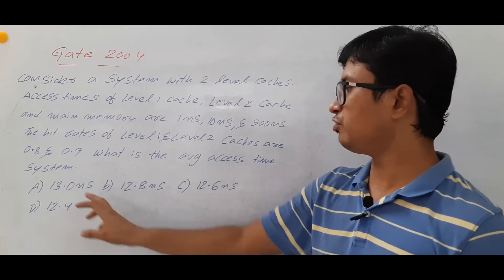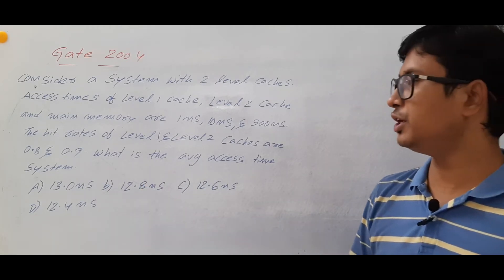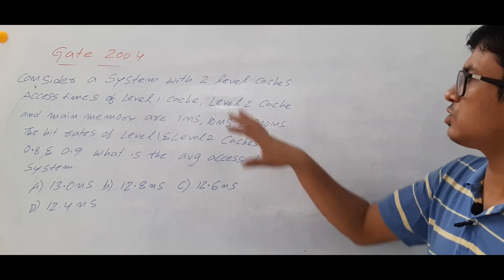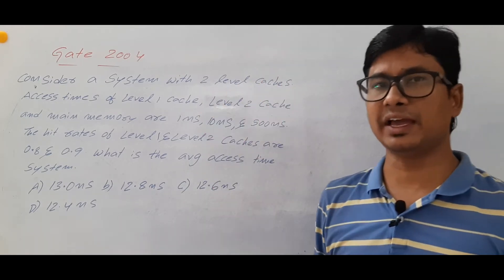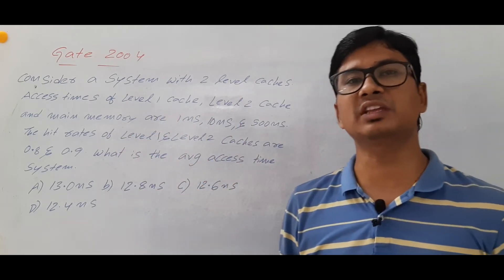They have given four options A, B, C, D all in terms of nanoseconds. We need to find which is the right answer. Now if you see that this question is related to the memory hierarchy. They have given two levels cache and one main memory. So totally we have three levels.